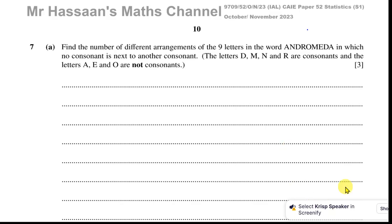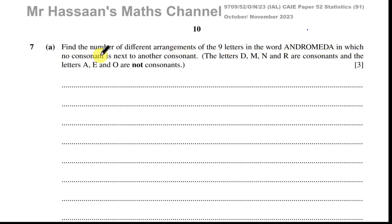So it says: find the number of different arrangements of the 9 letters in the word Andromeda in which no consonant is next to another consonant. The letters D, M, N and R are consonants, and the letters A, E and O are not consonants — they are vowels basically. So we have vowels and consonants here.